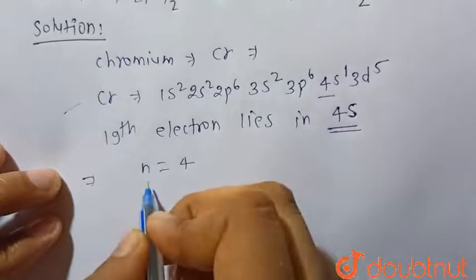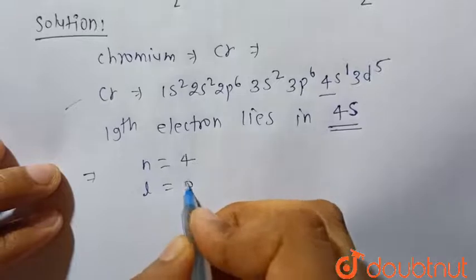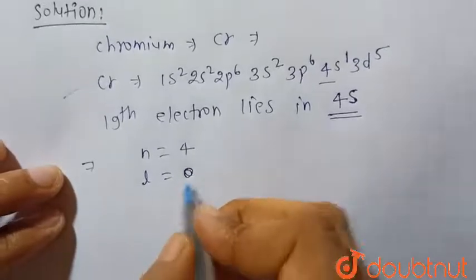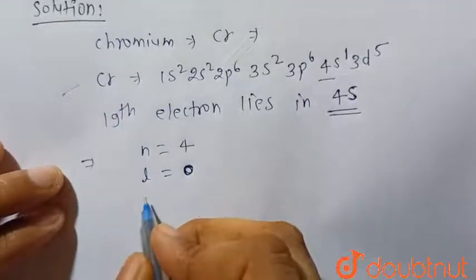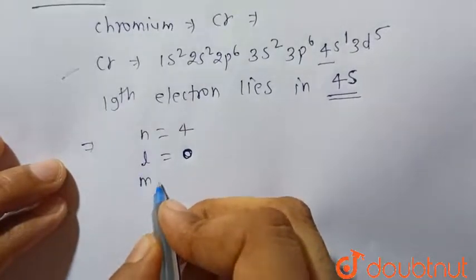For 4s, n = 4, where n is the principal quantum number. And we know that for s subshell, l = 0, where l is the azimuthal quantum number. And since l = 0, ml will also be equal to 0.